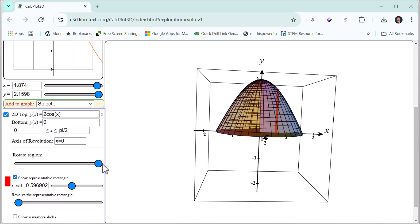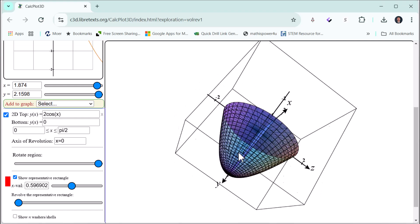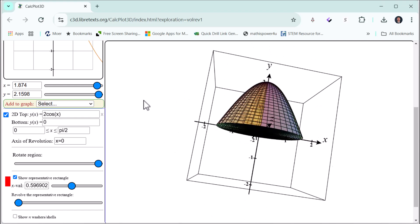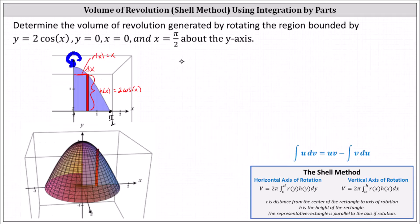Our goal here is to use the shell method to determine the volume of this solid. Going back to our work, we have the volume V equals 2 pi times the integral from zero to pi divided by 2, where the integrand is r of x times h of x, which in our case is x times 2 cosine x dx. Let's factor out the 2 and write this as 4 pi times the integral from zero to pi divided by 2 of x times cosine x dx.